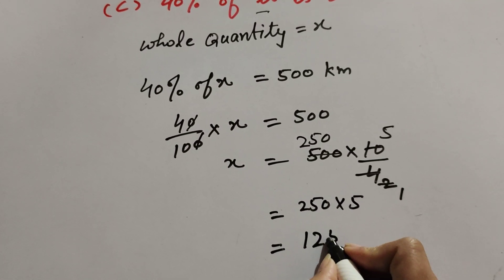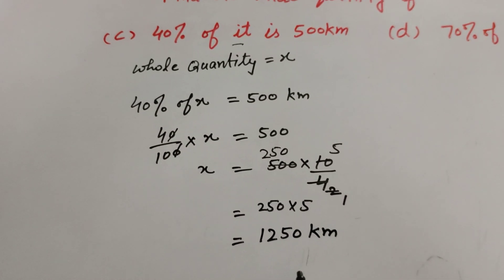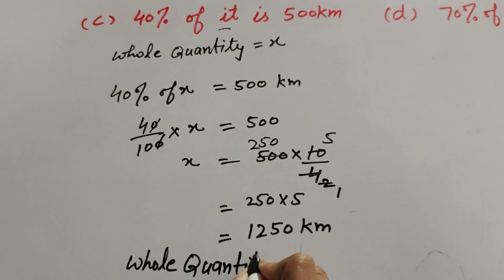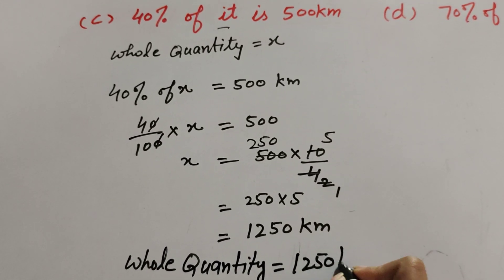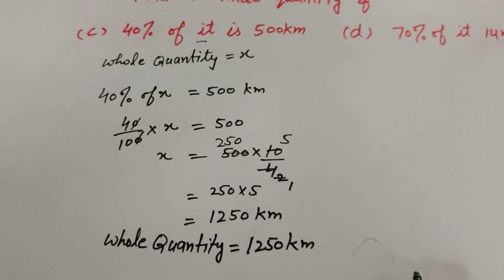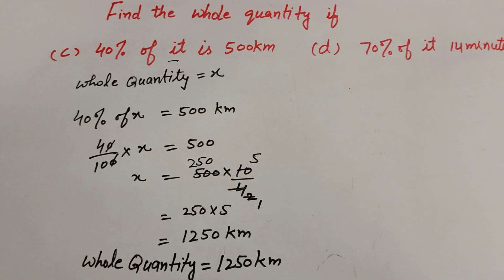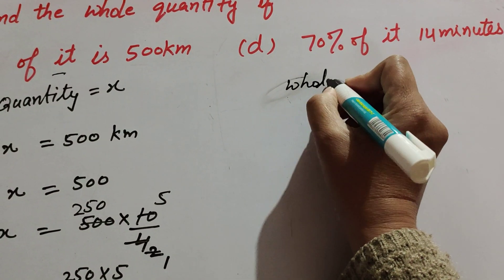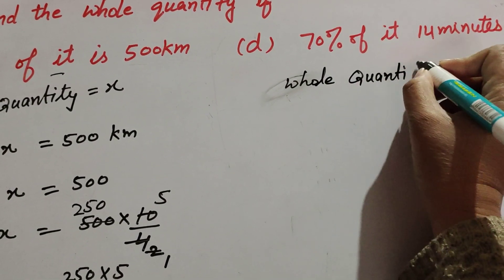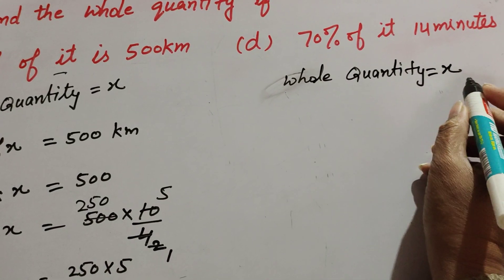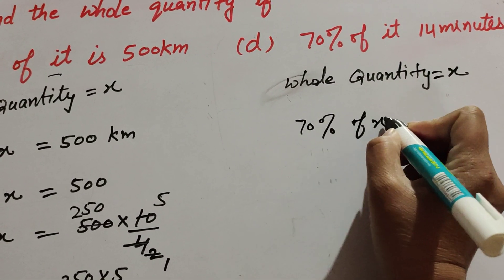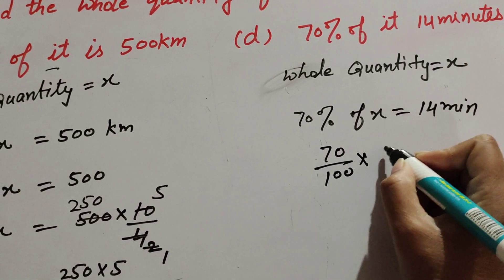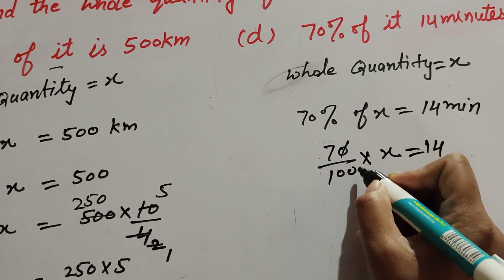So the whole quantity is 1,250 km. Now we move to part d: 70% of it is 14 minutes. We suppose whole quantity is x. So 70% of x equals 14 minutes. 70% is 70 over 100, multiply x equals 14. The zeros in numerator and denominator cancel, giving 7 over 10.